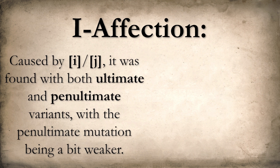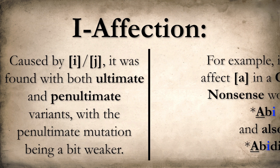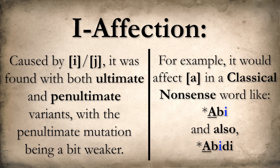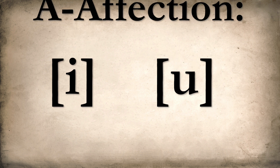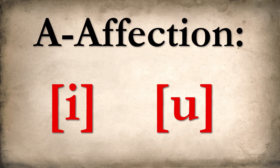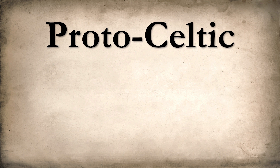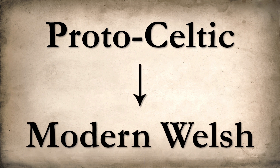To contrast, I-affection — a change caused by the presence of the vowel E and its semi-vowel equivalent, YA — was found with both ultimate AND penultimate variants, with the penultimate mutation being a bit weaker in its impacts. To witness the effects of A-affection on both short E and O in all its glory, let's take a look at the evolution of a noun-adjective pair from Proto-Celtic to modern Welsh.